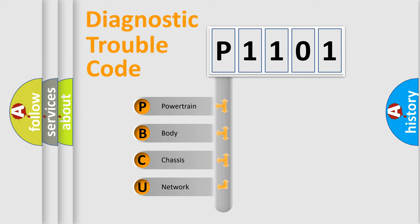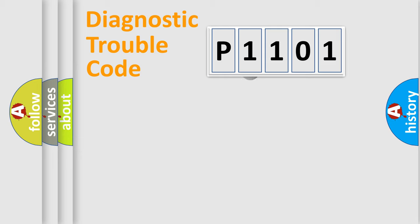We divide the electric system of automobile into four basic units: powertrain, body, chassis, and network. This distribution is defined in the first character code.